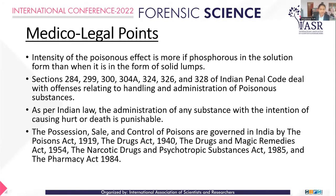Section 302 of the IPC deals with punishment for murder, including murders caused by poisons. Section 304B deals with punishment for dowry death, and it also covers the majority of poisoning-related deaths in both rural and urban areas of India.